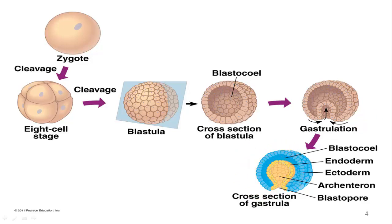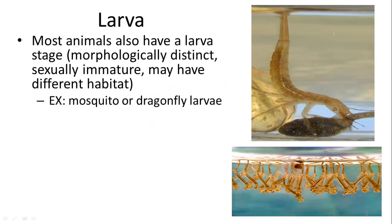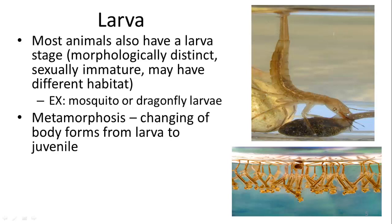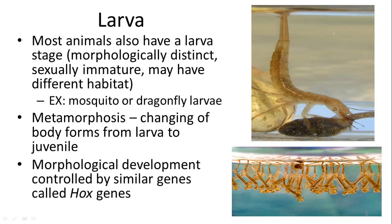Most animals also have a larval stage. This larval stage is morphologically distinct from the adult stage — generally non-reproductive and may even occupy a different habitat, such as dragonfly or mosquito larvae. They then metamorphose into an adult with a different body type. Morphological development is controlled by a set of genes called Hox genes, which allow for cephalization and other specializations such as appendages.